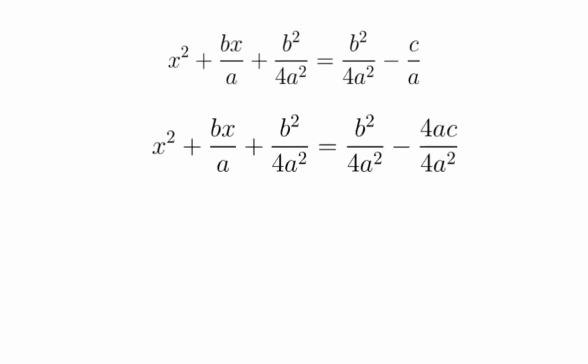And in this next step, right here, we just get minus c over a to have the same denominator as b squared over 4a squared. So, we just multiply both sides of minus c over a, multiply both sides of the fraction by 4a, and that'll settle it.